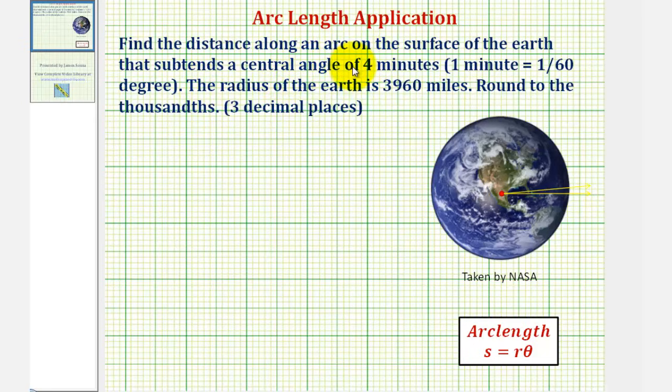We want to find the distance along an arc on the surface of the earth that subtends a central angle of four minutes, where one minute equals one-sixtieth of a degree. The radius of the earth is three thousand nine hundred sixty miles, and we're asked to round to the thousandths, or three decimal places.